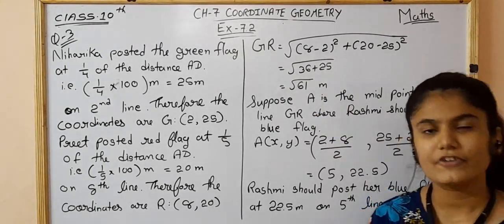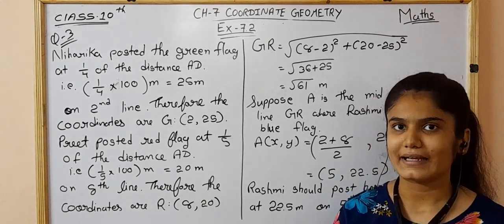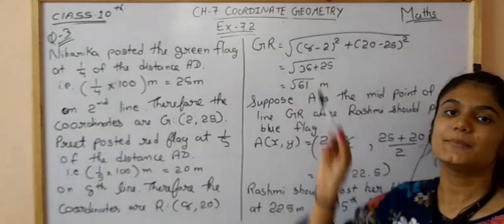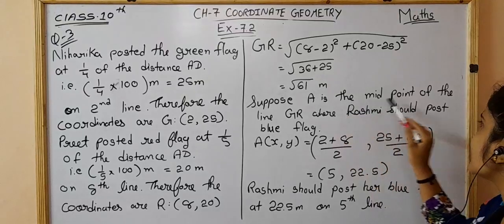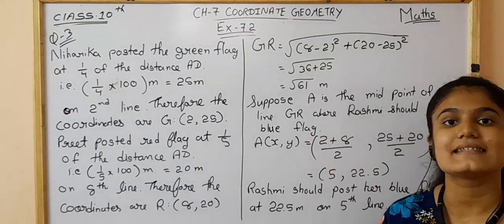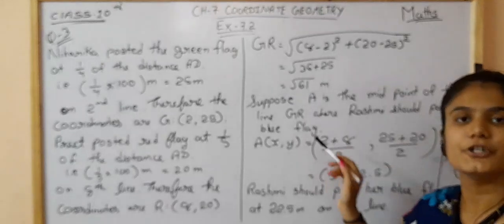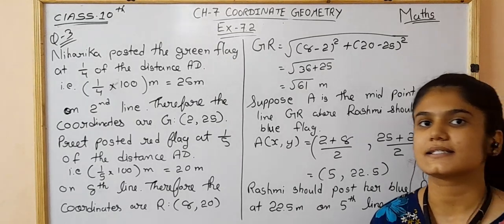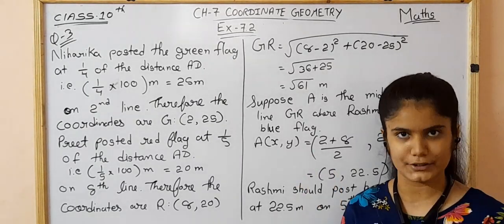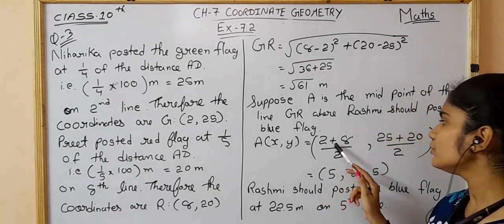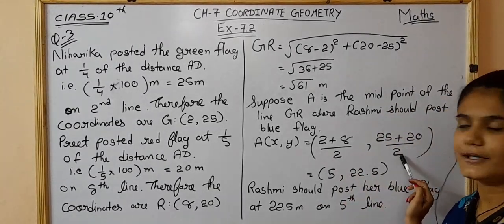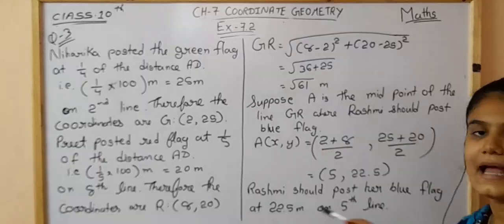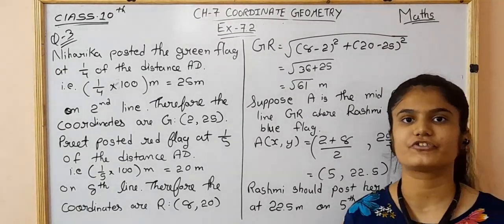Rashmi has to post a blue flag halfway between the two flags, so we need the midpoint of line segment GL. Suppose A is the midpoint. Using the midpoint formula: x1 plus x2 by 2 and y1 plus y2 by 2, that is (2+9)/2 and (25+20)/2, which gives 5.5 and 22.5. So Rashmi should post her blue flag at 22.5 meters on the 5th line.